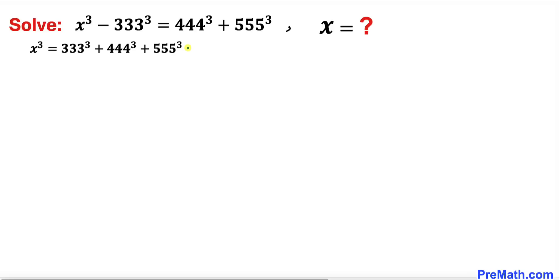Now let's manipulate these numbers on the right-hand side. We can write 333 as 111 times 3, likewise 444 as 111 times 4, and 555 as 111 times 5.